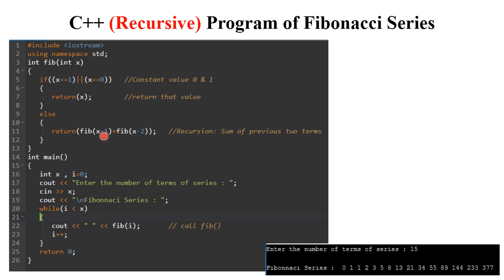For example, if x equals 3 (other than 0 or 1): fib(3-1) plus fib(3-2) equals fib(2) plus fib(1) equals 1 plus 1 equals 2, wait — fib(2) plus fib(1) equals 1 plus 1: actually fib(x-1) + fib(x-2) calculates the next number. The fib function calls itself recursively up to 15 terms, with each call checking the condition until the full series is printed.